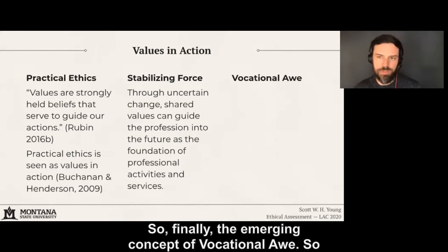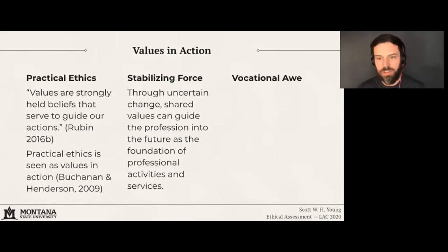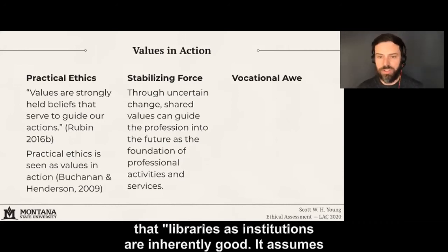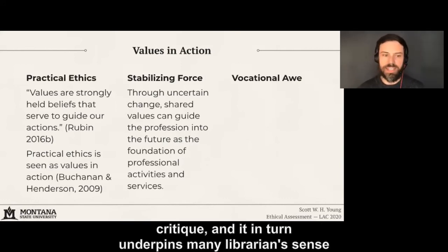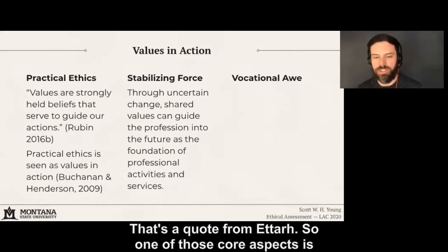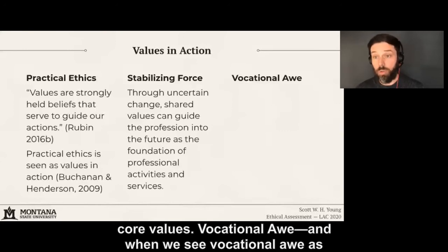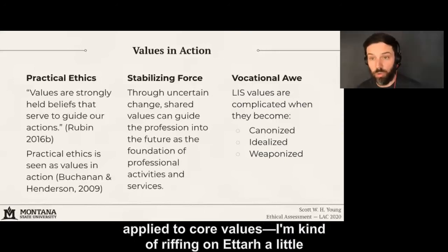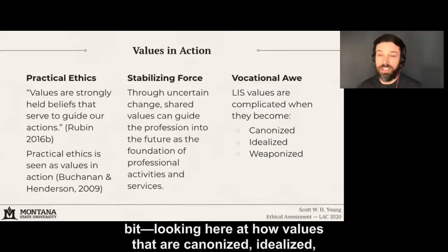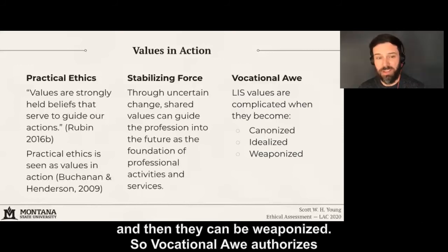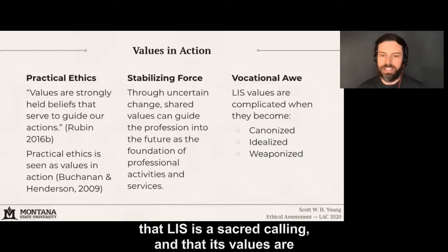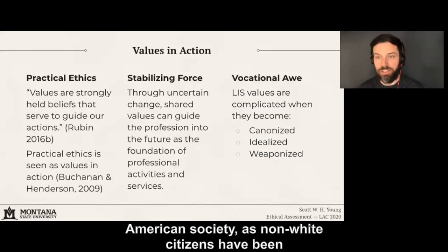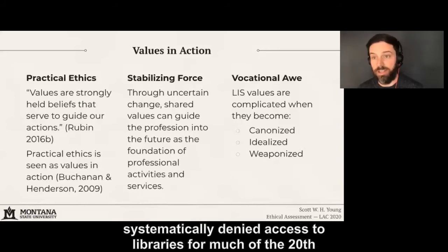Finally, the emerging concept of vocational awe adds a useful critical dimension to this discussion. First introduced by Etar in 2017, vocational awe is the idea that libraries as institutions are inherently good. It assumes that some or all core aspects of the profession are beyond critique, and it in turn underpins many librarians' sense of identity and emotional investment in the profession. One of those core aspects is core values. When we see vocational awe as applied to core values, values then are canonized, idealized, and can be weaponized. The core values of access, Etar points out, has not been achieved equally in American society, as non-white citizens have been systematically denied access to libraries for much of the 20th century.